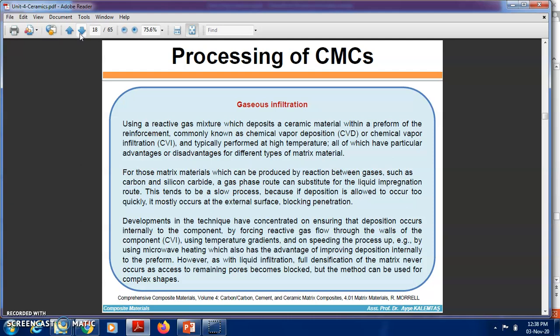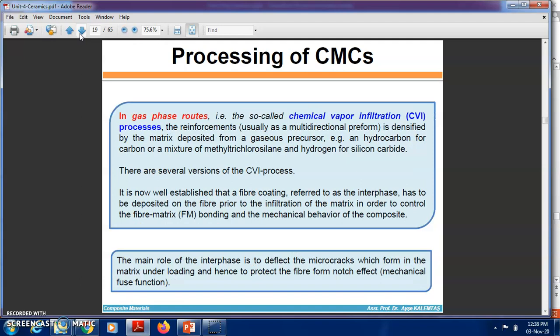However, as with liquid infiltration, full densification of the matrix never occurs as access to remaining pores becomes blocked. But the method can be used for complex shapes. In the so-called chemical vapor infiltration process, the reinforcement is densified by the matrix deposited from a gaseous precursor, for example a hydrocarbon for carbon or a mixture of methyltrichlorosilane and hydrogen for silicon carbide. It is well established that fiber coating, referred to as the interface, has to be deposited on the fiber prior to infiltration of the matrix in order to control fiber-matrix bonding and mechanical behavior of the composite.